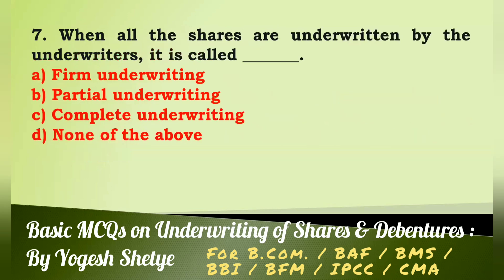Question 7: When all the shares are underwritten by the underwriters it is called — (a) firm underwriting, (b) partial underwriting, (c) complete underwriting, (d) none of the above. Answer: When all the shares are underwritten by the underwriters it is called complete underwriting. Answer C.